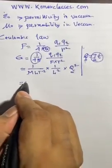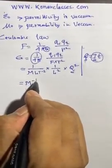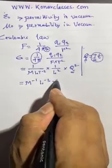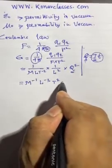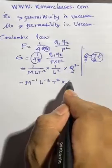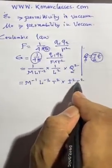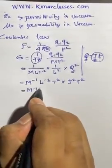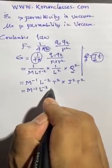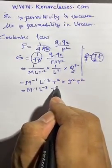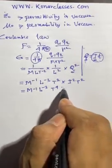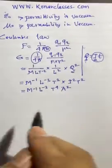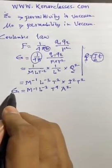So here it is coming m to the power minus 1, l to the power minus 3, then t square. And q square means i square t square, because charge is ampere into time. Simplifying: m to the power minus 1, l to the power minus 3, t to the power 4, and a to the power 2. So this is the dimension of epsilon naught, permittivity.